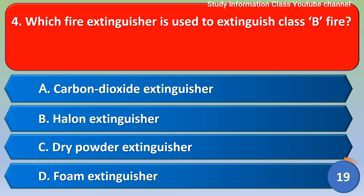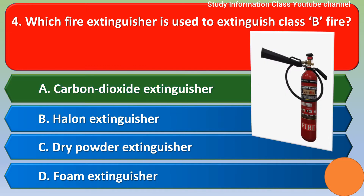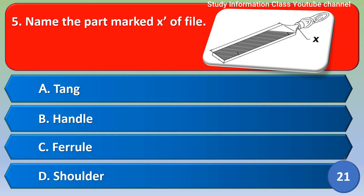Next question: which fire extinguisher is used to extinguish class B fire? Option A) carbon dioxide extinguisher, B) halone extinguisher, C) dry powder extinguisher, D) foam extinguisher. The correct answer is option A, carbon dioxide extinguisher.